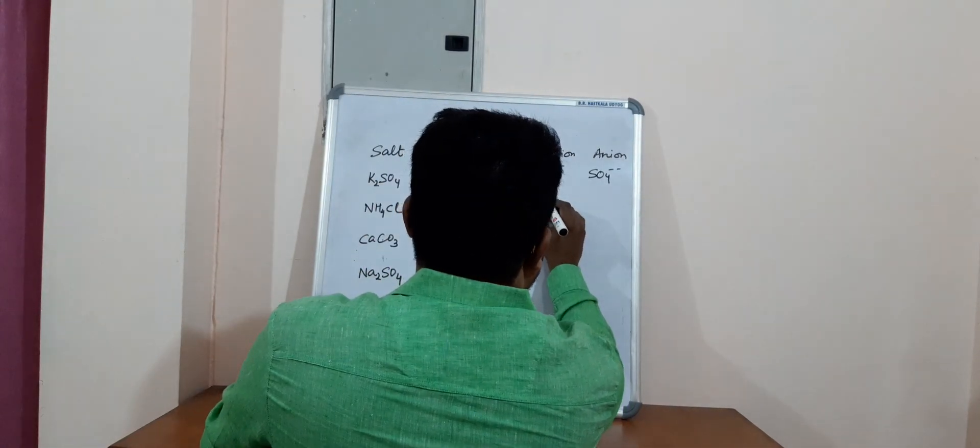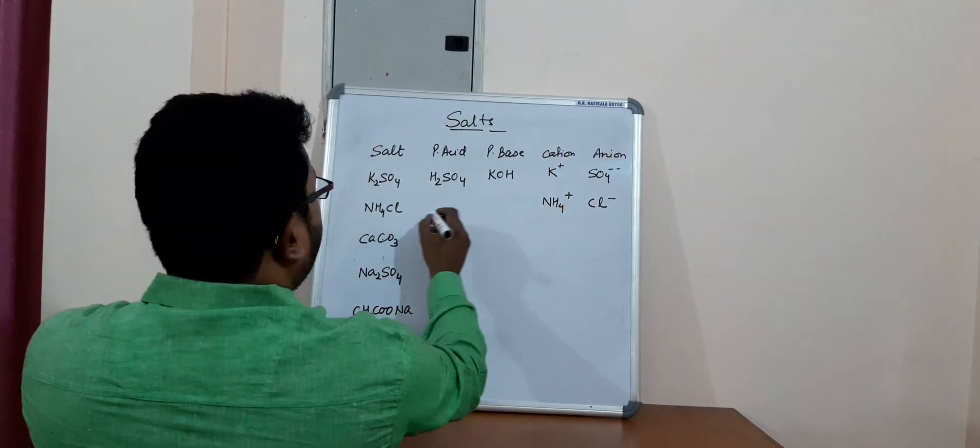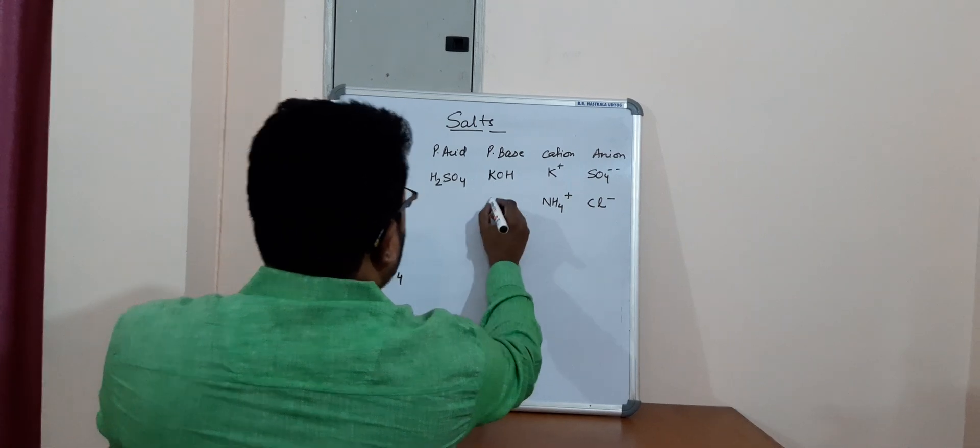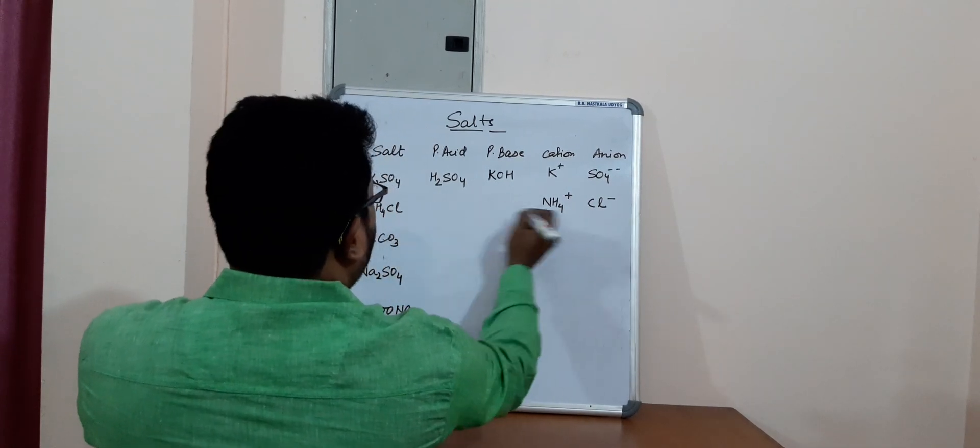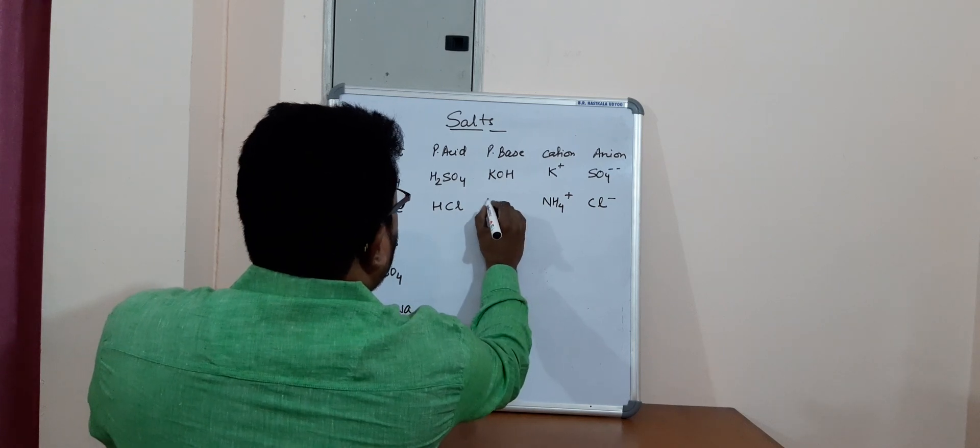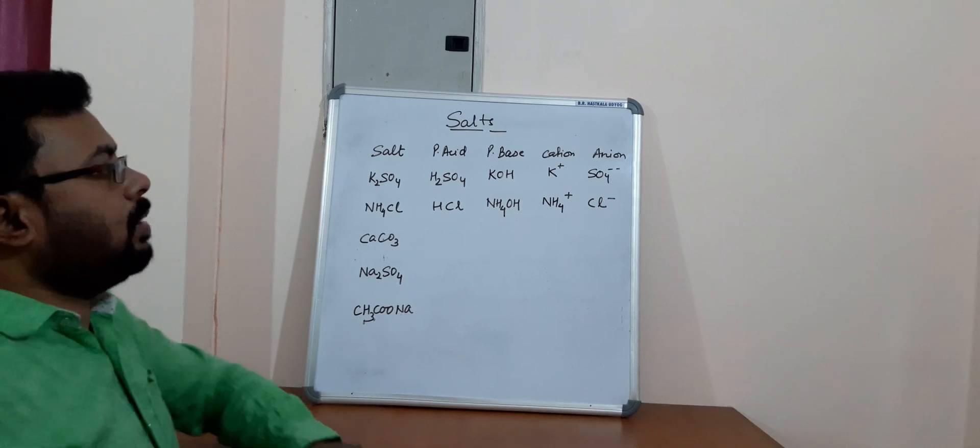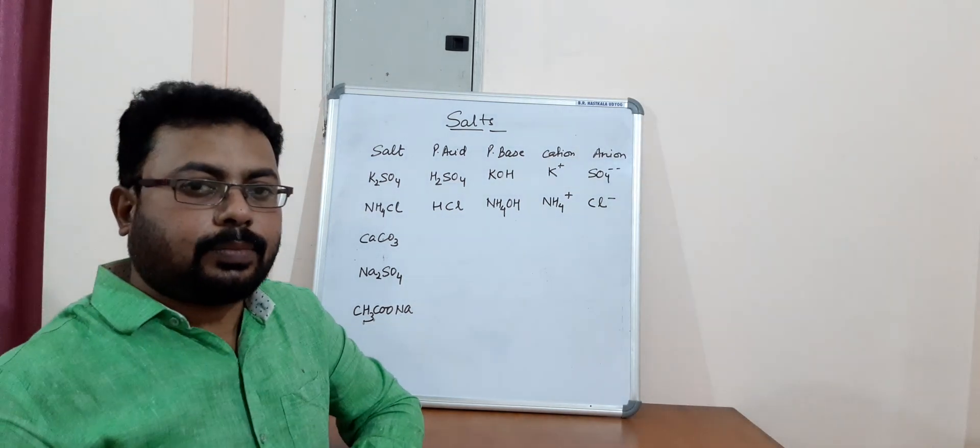So cation is ammonium and chloride is the anion. Cation comes from the base and anion comes from acid. So acid would be HCl and the base would be NH4OH, that is ammonium hydroxide.